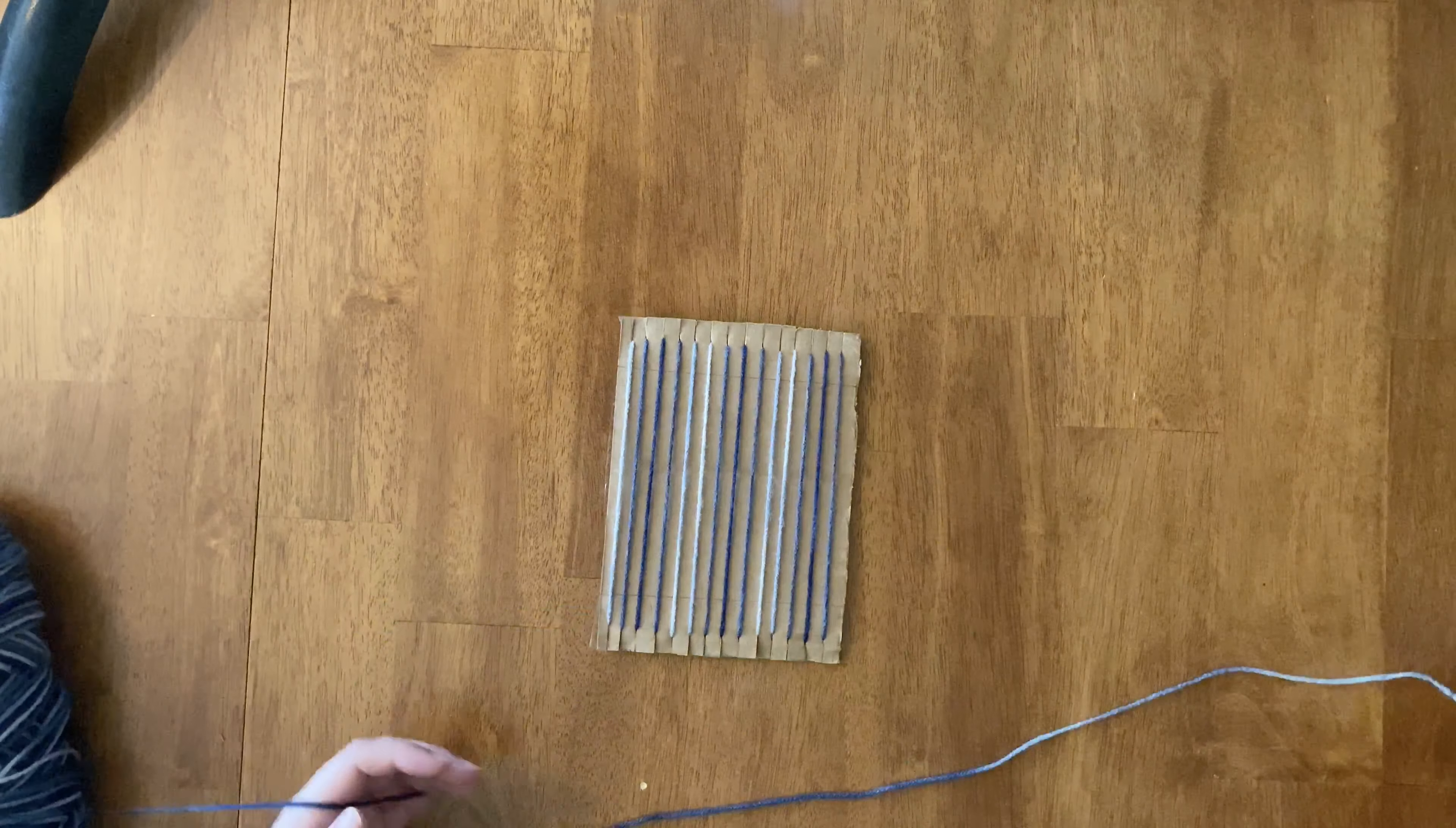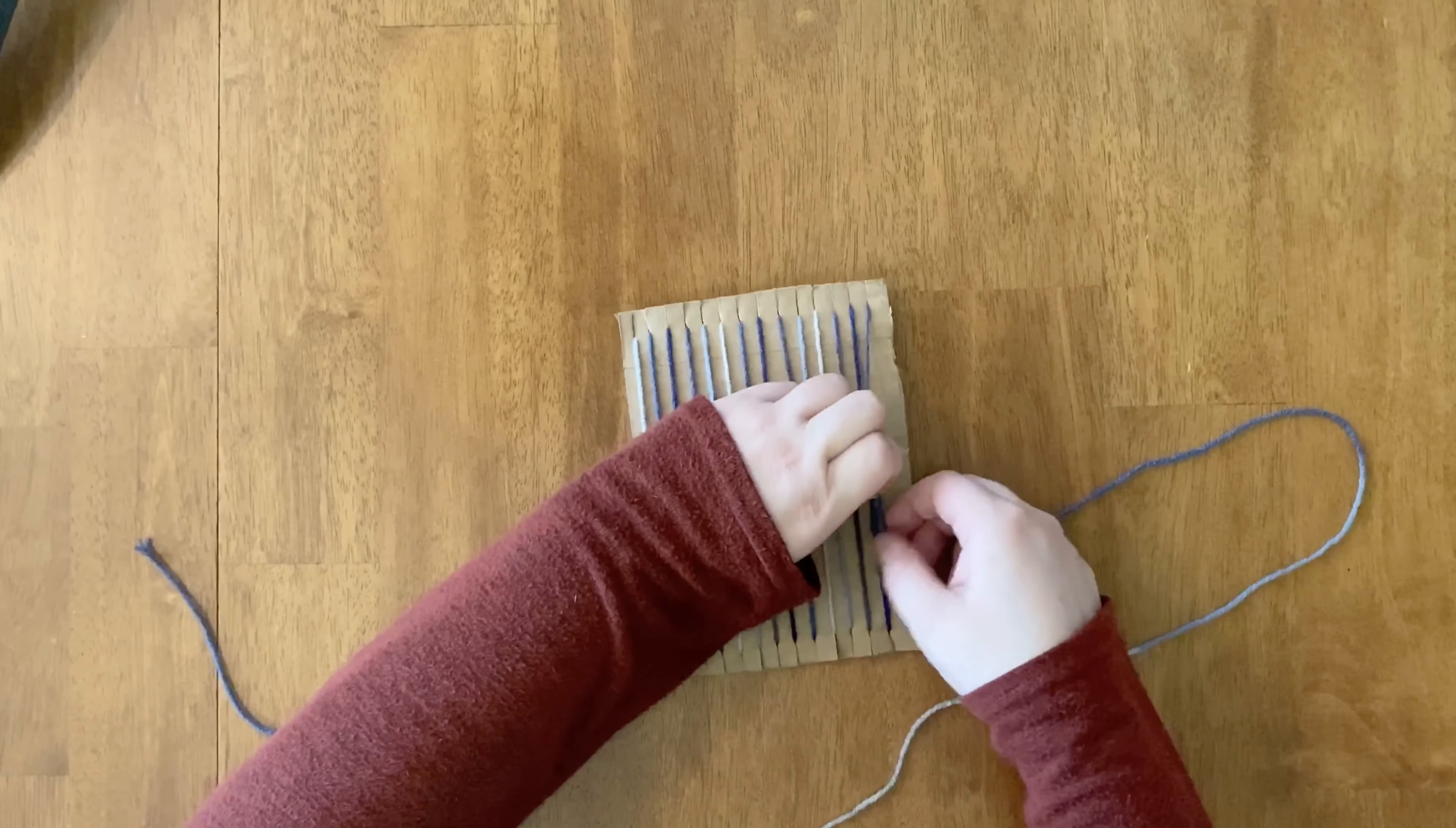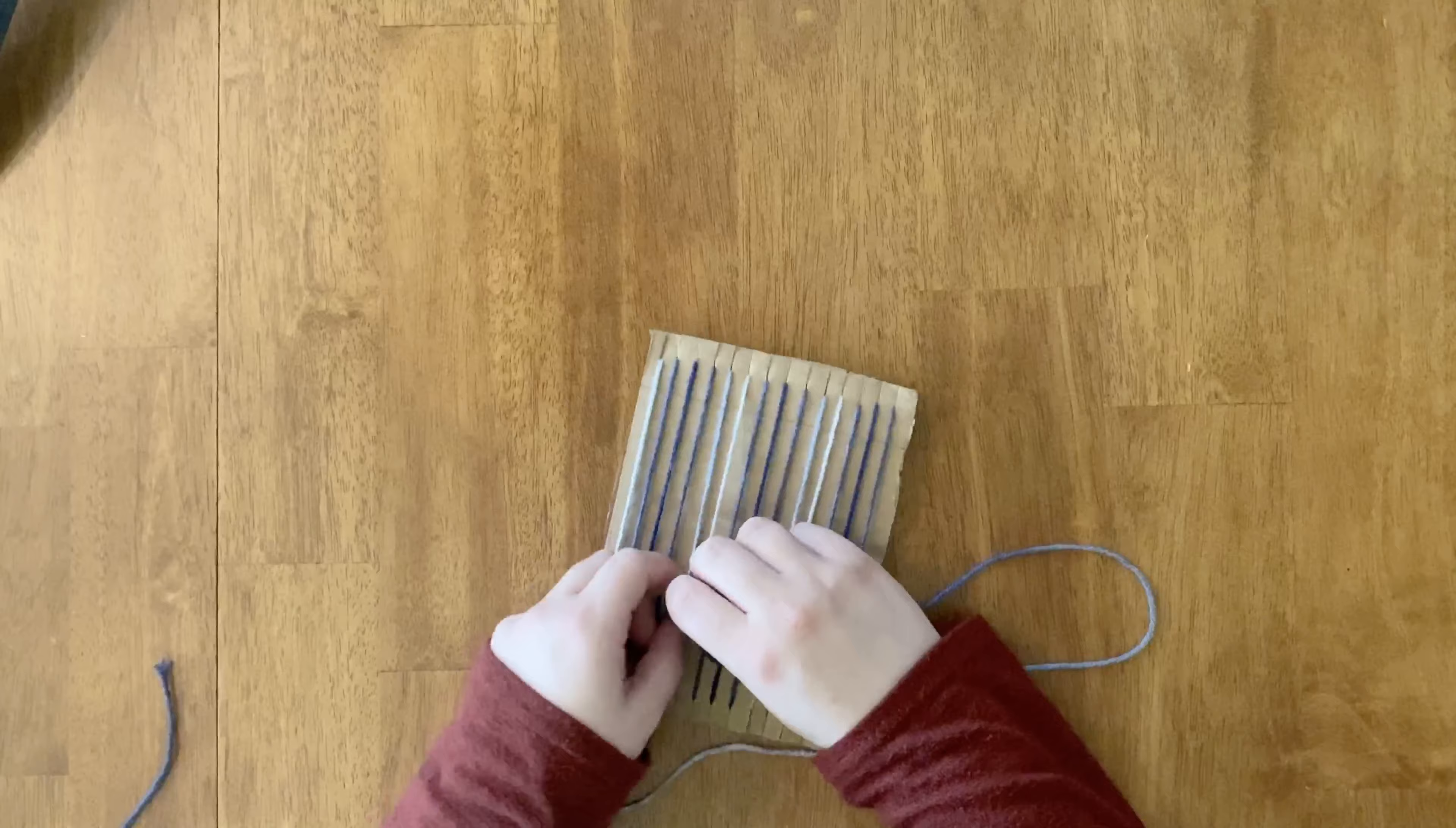The first step is to cut a piece of yarn from your supply. Remember this is the warp and this will be the weft. You'll take your weft string and you'll weave it under, over, under, and over and under, and over and under. This is the pattern that you'll be doing throughout the whole loom.